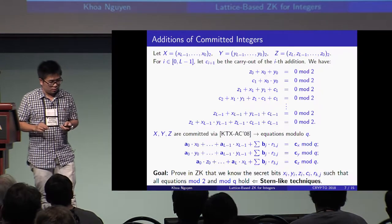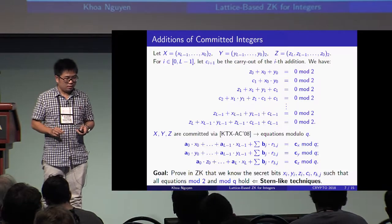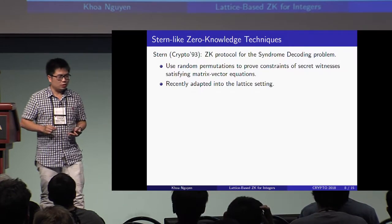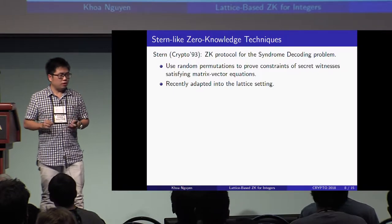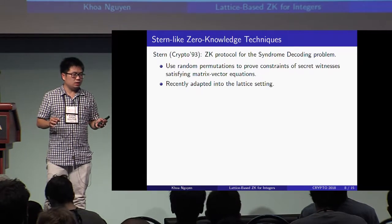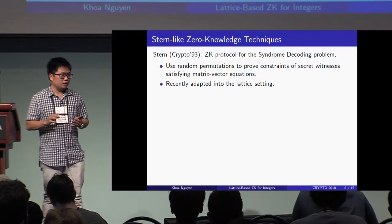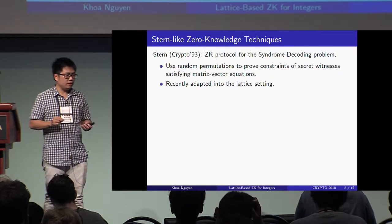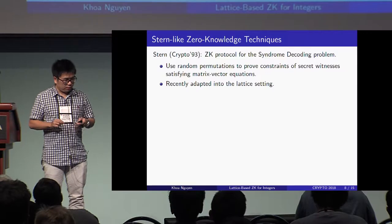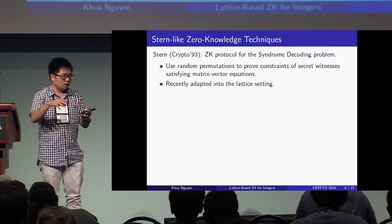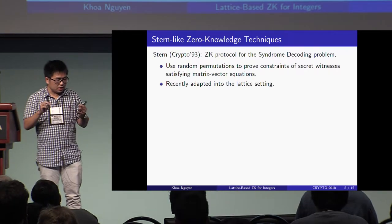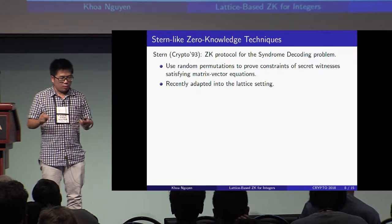To this end we will use Stern-like techniques. Ten years ago at CRYPTO, Stern proposed a zero-knowledge protocol for the syndrome decoding problem in the context of code-based cryptography. The main idea is to use random permutations to prove some constraints of the secret witnesses that satisfy some matrix-vector equations. This idea has recently been adapted into the lattice setting. We need to prove knowledge of some secret bits and of some products of two secret bits.